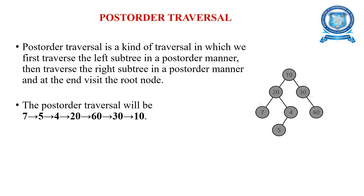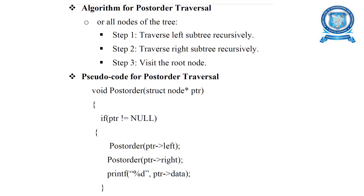In post-order traversal, we traverse the left sub-tree first, then the right sub-tree, then visit the root node. In the diagram, the order is: 7, 5, 4, 20, 60, 30, then 10. The algorithm is: traverse left sub-tree recursively, traverse right sub-tree recursively, then visit the root node. The pseudo code checks the pointer for null, then accesses left, right, then data.